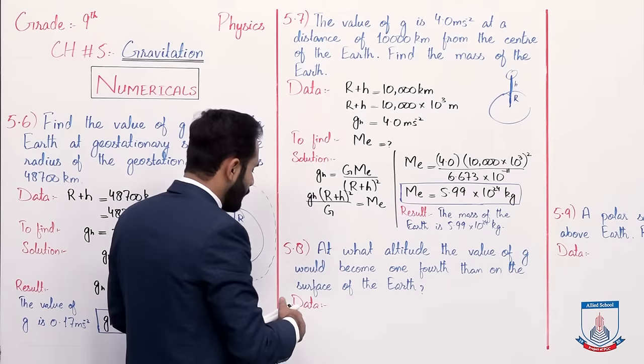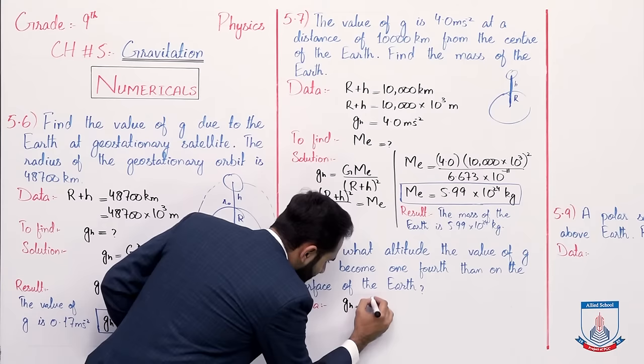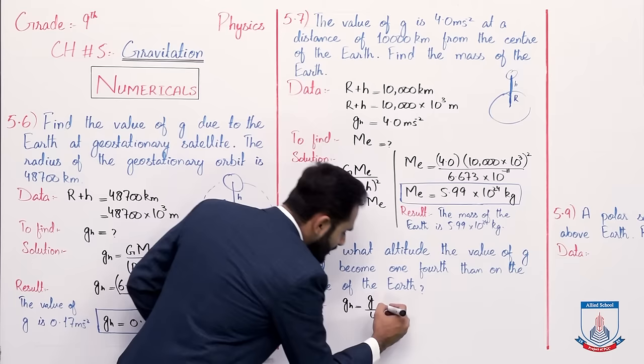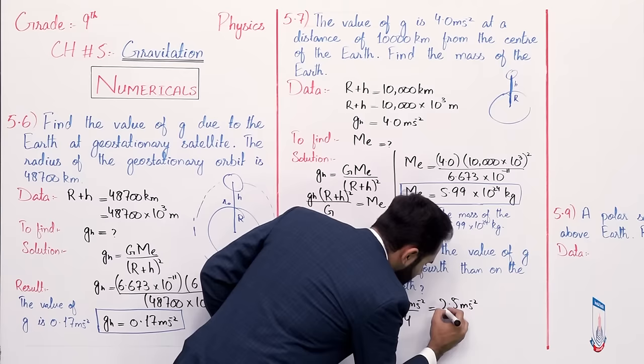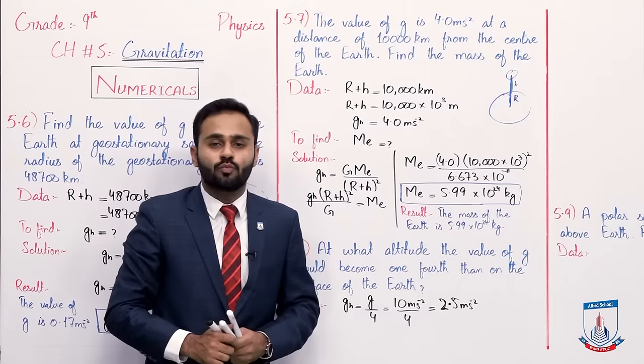For g_h, we take whatever g's value is and divide it by four. As you know, g's value is 10 meter per second squared. Dividing by four gives 2.5 meter per second squared. So g_h at that height is 2.5 meter per second squared.